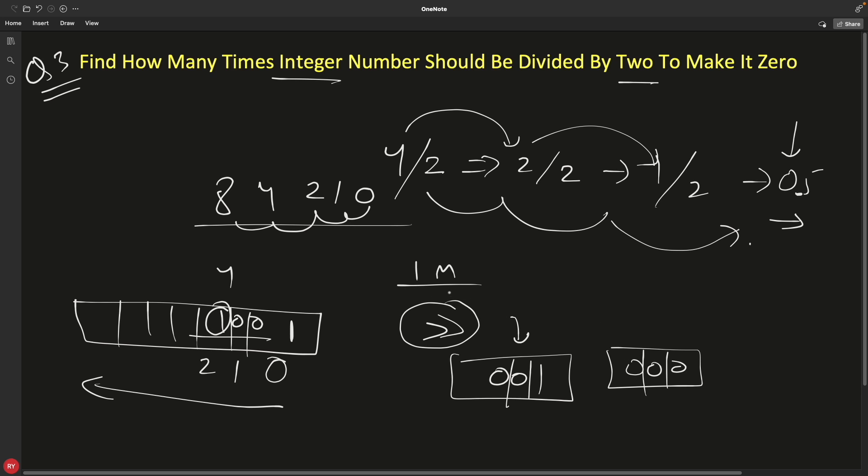This method is actually good compared to this traditional method where you divide it by two, then store, and then divide by two again and keep looping through that number till that number reaches to zero.